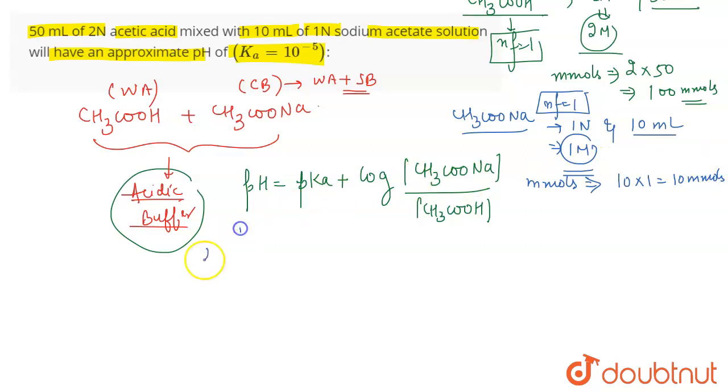Okay so therefore pH will become pKa which is now you are given Ka is equal to 10 to the power minus 5. So pKa is equal to minus log of Ka which is 10 to the power minus 5. So minus log of 10 to the power minus 5 means 5. So 5 will be the value of pKa because this minus 5 will come in front and minus minus will become plus and log 10 is 1. So therefore pKa is 5.